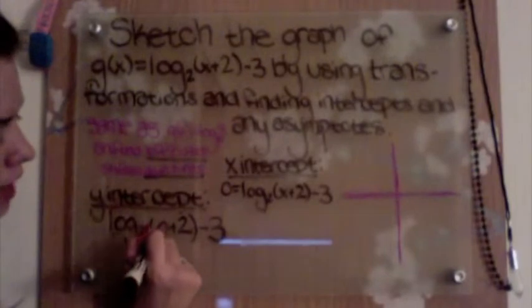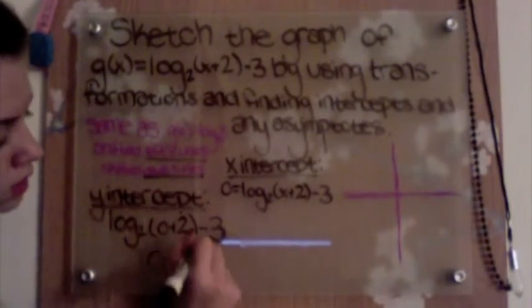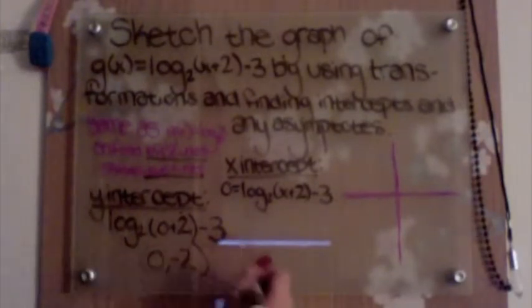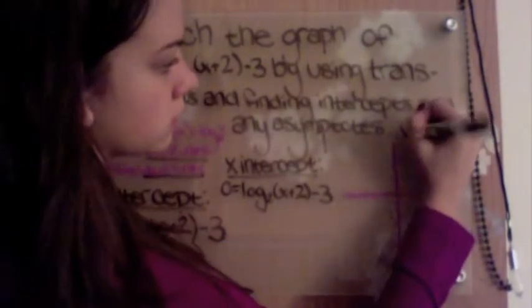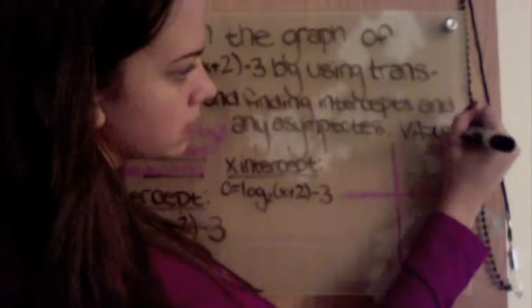So for our y-intercept, we have the coordinate (0, -2). And our negative 2 over here is our vertical asymptote. So our vertical asymptote, we'll write over here, is y = -2.